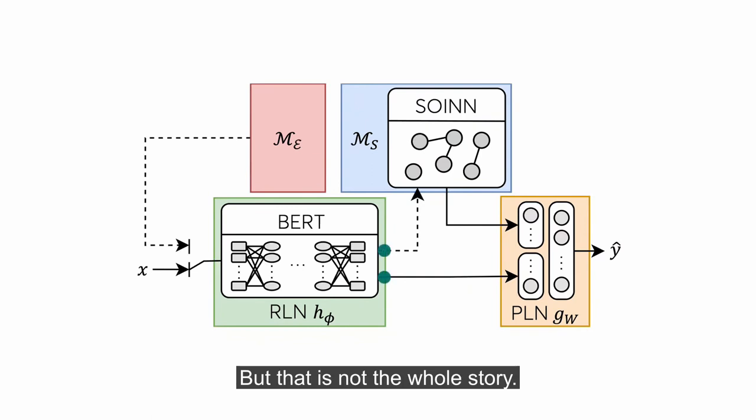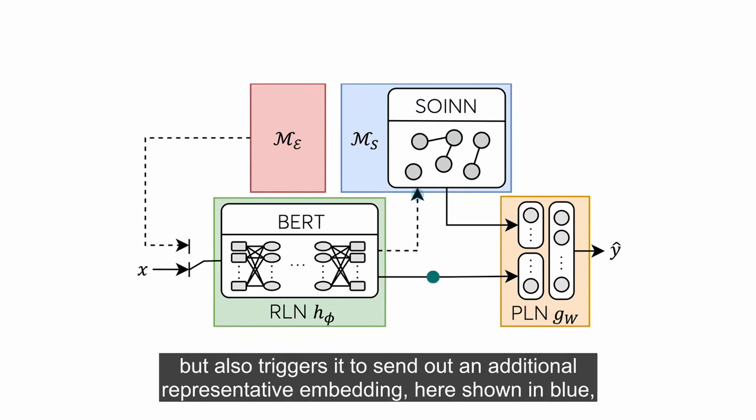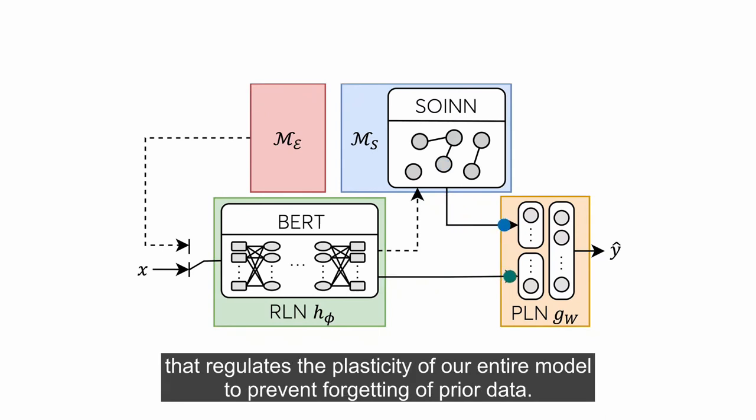But that is not the whole story. Each BERT embedding, here colored in green, is not only input to the semantic memory, but also triggers it to send out an additional representative embedding, here shown in blue, that regulates the plasticity of our entire model to prevent forgetting of prior data.